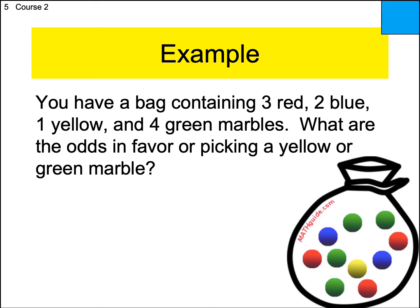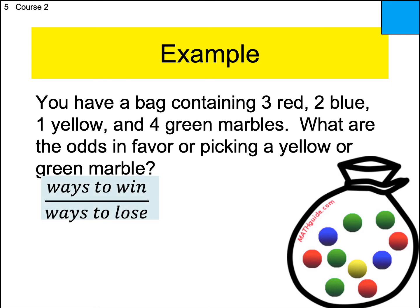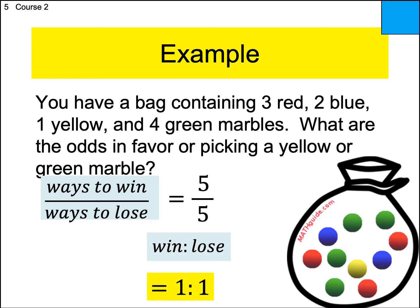Same game, same marbles. What are the odds in favor of picking a yellow or a green? Yellow or green defines winning — there's one yellow and four green, so five ways to win. If you don't draw yellow or green, you lose — that's red or blue: three red plus two blue equals five ways to lose. So five to five, which reduces to one to one. You're just as likely to win as to lose — one to one odds, which is 50% probability.